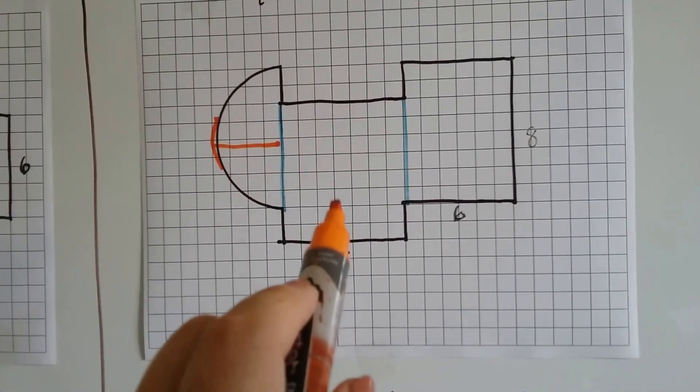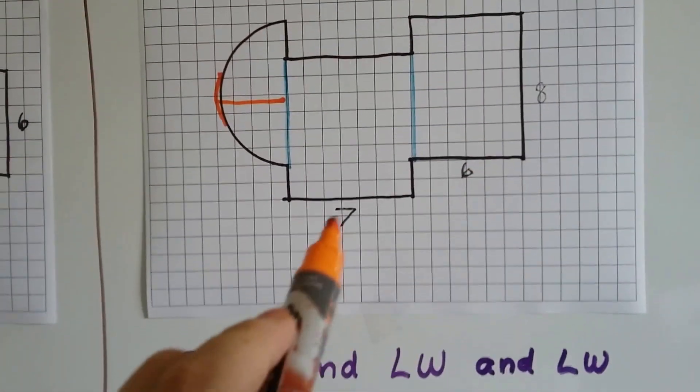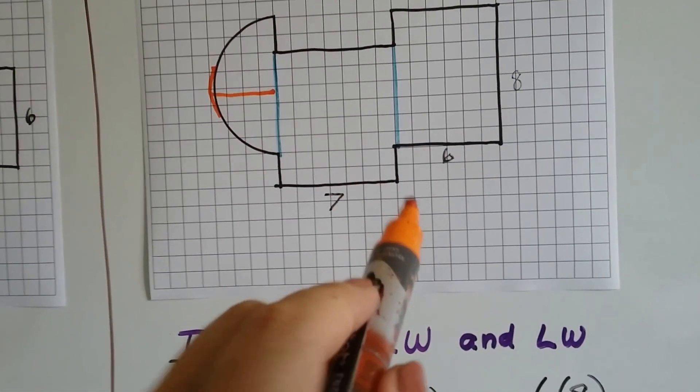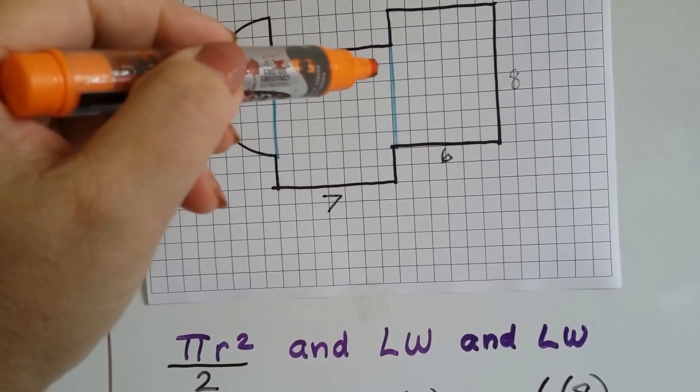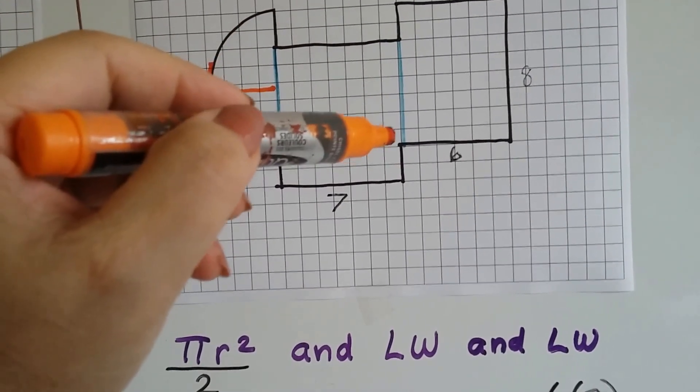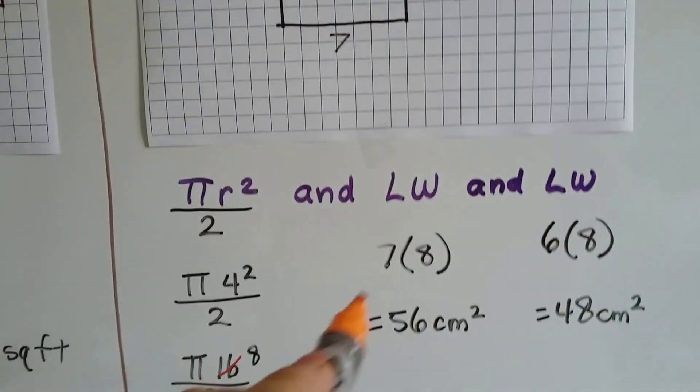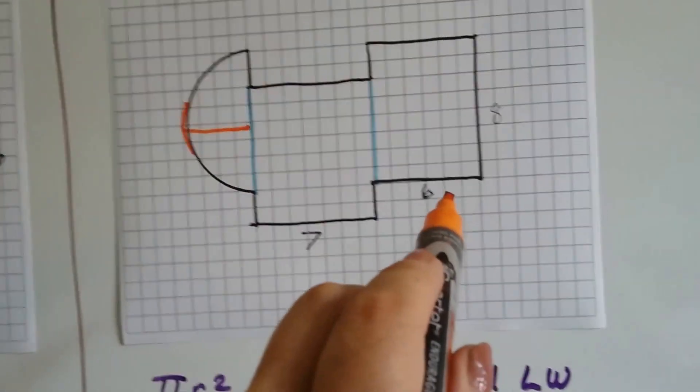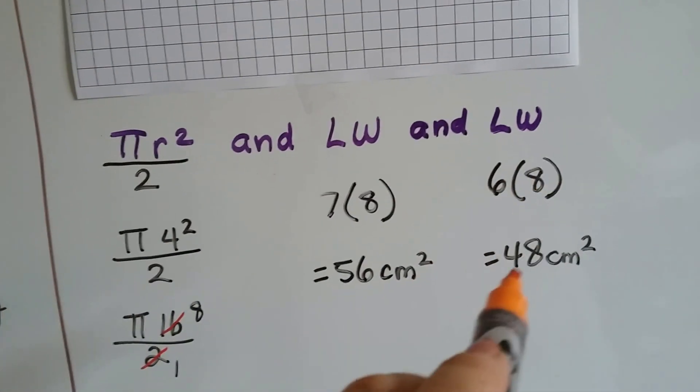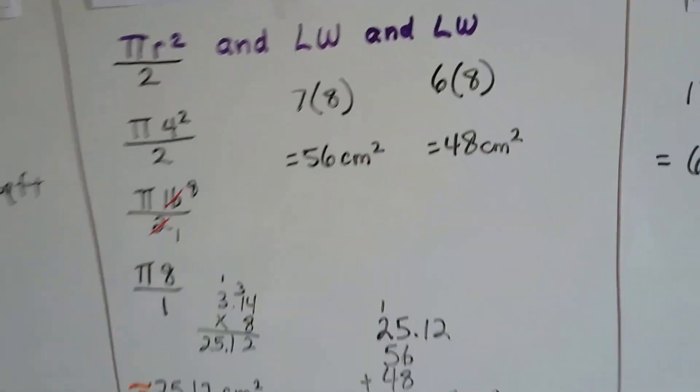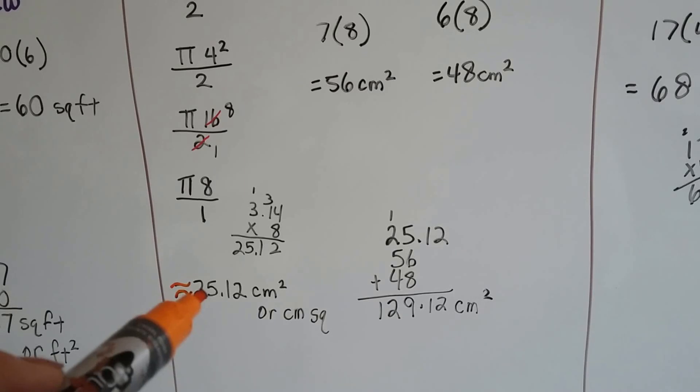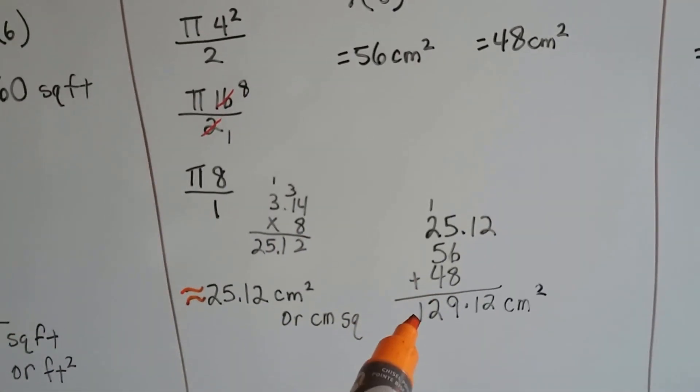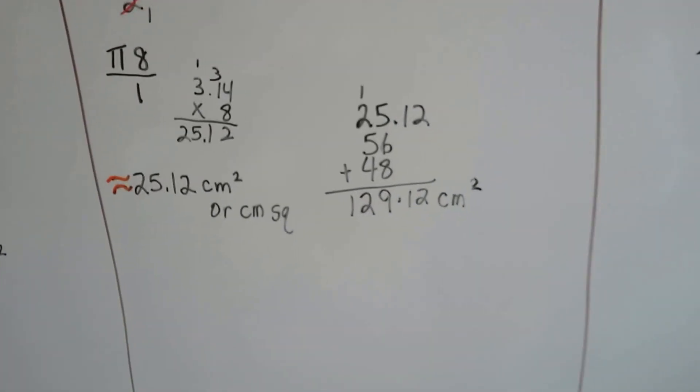Then we've got a rectangle and a rectangle. We've got one rectangle that we need the length and width, 7. And this side is 1, 2, 3, 4, 5, 6, 7, 8. So, 7 times 8 is 56, so that's 56 square centimeters. And this one is 6 by 8. 6 times 8 is 48 centimeters squared.